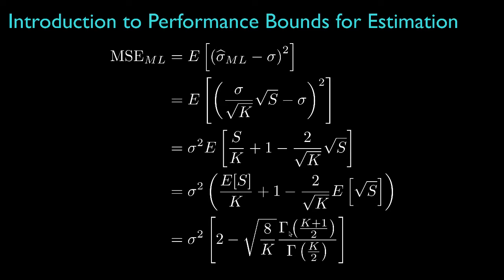Well, this gives us an expression that evaluates the mean square error for the maximum likelihood estimator as a function of the true parameter value and the number of samples in the observation. We might ask ourselves, though, if another estimator would have a lower mean square error.